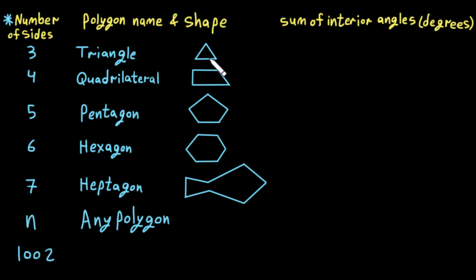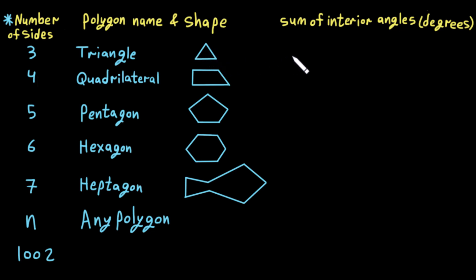As we know, the sum of interior angles of a triangle is 180 degrees. That means if we add these three angles together, the sum is 180 degrees, and we have already proved that in one of our previous videos.